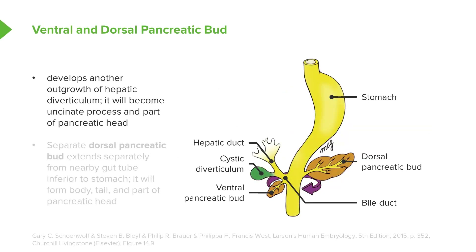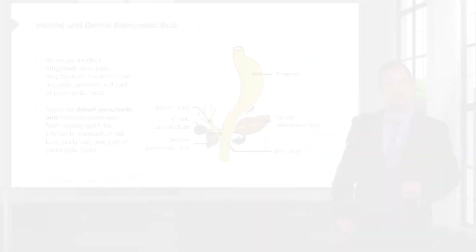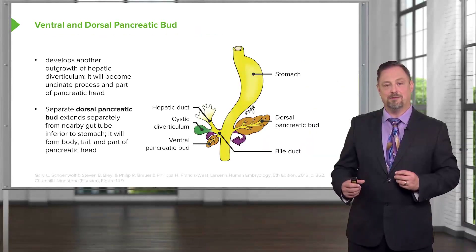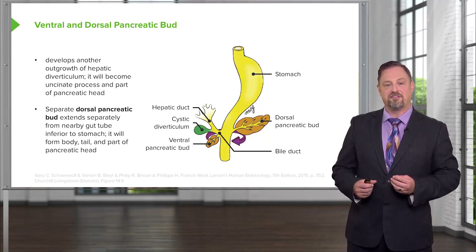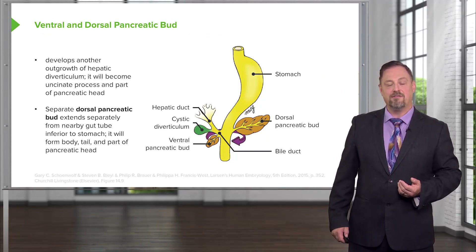In addition to the cystic diverticulum, two more buds develop off of the foregut. Just inferior to the cystic diverticulum is the ventral pancreatic bud, and there is also a dorsal pancreatic bud. These two separate developments off of the foregut are going to be brought together by rotation of the stomach and migration of the liver.